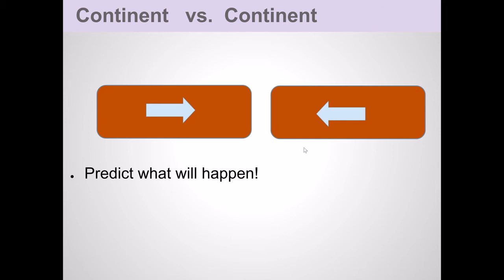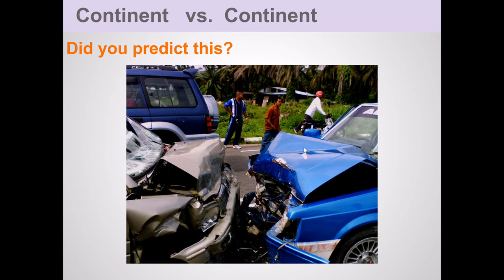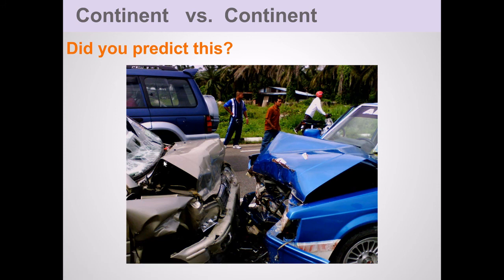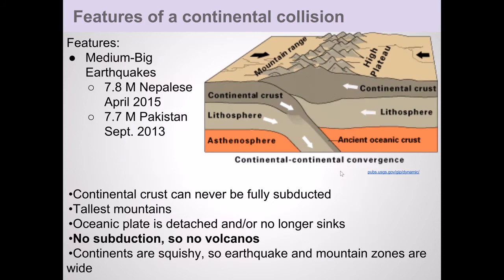The best analogy I have is of two cars colliding. Notice the hoods popping up — neither car going below the other in this case. And these popped-up hoods represent very large mountains.